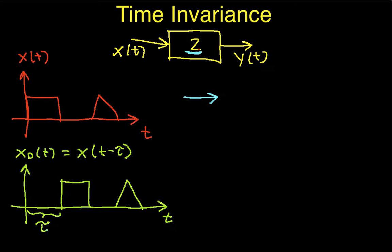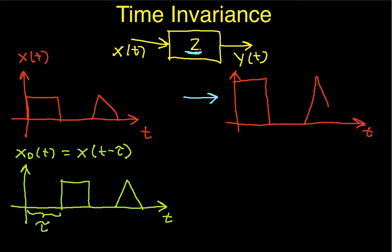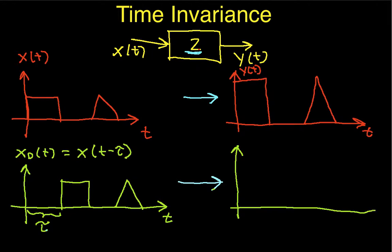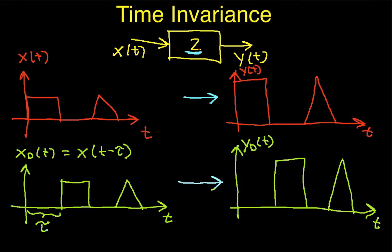So let's put these two signals through this system that multiplies everything by 2 and see what we get. The first signal — everything gets multiplied by 2, so the rectangular pulse is the same duration but gets taller, having a higher amplitude. The triangular pulse is also the same duration but gets taller. So this is y(t), the output due to the undelayed input. Now if I look at what comes out when I delay the input, I get the delayed input multiplied by 2. So this is what I call y_d(t), the system response to x_d.